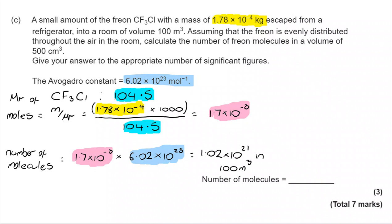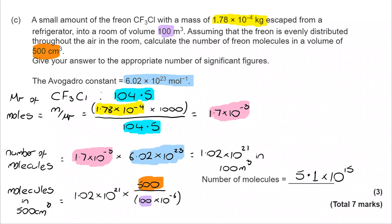But we don't want 100 meters cubed. We want 500 centimeters cubed. Now, part of this is you being aware that there are 1 million centimeters cubed in 1 meter cubed. This is going to allow you to do the conversion that you can see here. And that takes us to a total value of 5.1 by 10 to the 15.